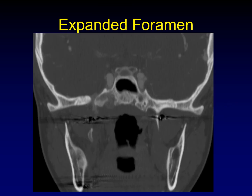Expansion of the foramen through which the nerve travels is a critical finding for perineural spread. For example, the foramen rotundum should be nice and round, but here it is expanded and in fact eroded around it as this squamous cell carcinoma extends down along the nerve. An expanded foramen is a classic finding of perineural spread.